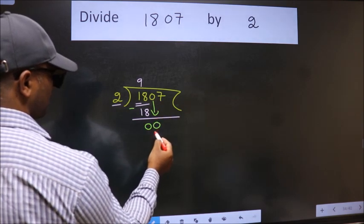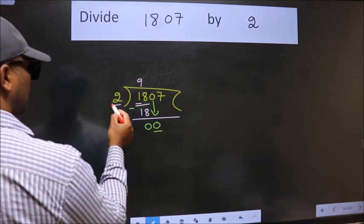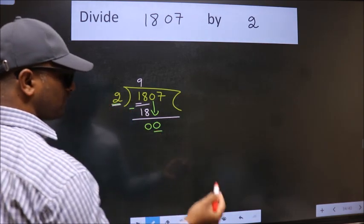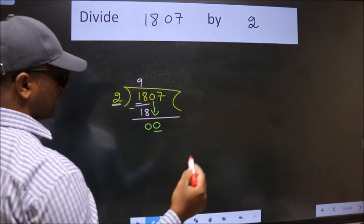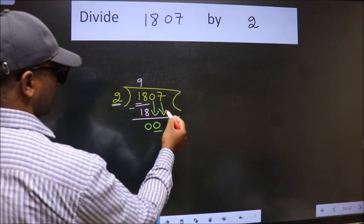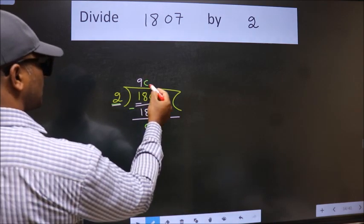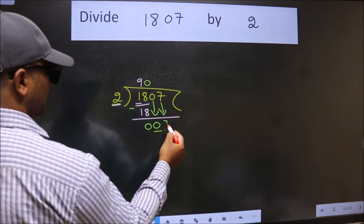So 0 down. Now here we have 0 and here 2. 0 is smaller than 2. So we should bring down the second number. And the rule to bring down the second number is put 0 here. Then only we can bring this number down.